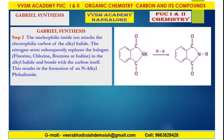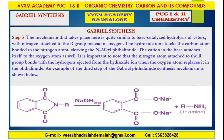In the second step, the intermediate compound subsequently replaces the halogen in the alkyl halide, resulting in the formation of N-alkyl phthalimide.